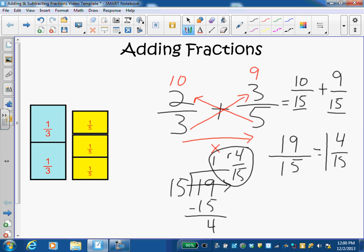The only other question is can four-fifteenths be divided and made into a simpler fraction? Is there anything that will go into four that will also go into fifteen? I run through my factors of four: one, two, and four, and my factors of fifteen: one, three, five, and fifteen. They don't share anything in common, so I'm finished. This turns into one and four-fifteenths as my answer.